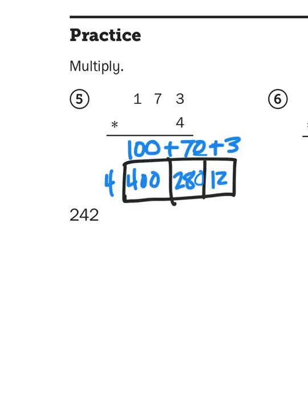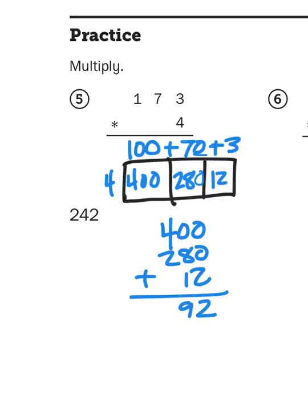So now, all I have to do is I need to add up those three partial products, four hundred, two hundred and eighty, and twelve. When I add those together, going one place value at a time from right to left, I should say, I find that my total is six hundred and ninety-two.